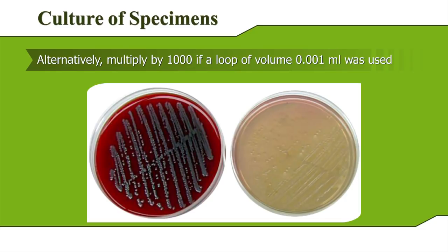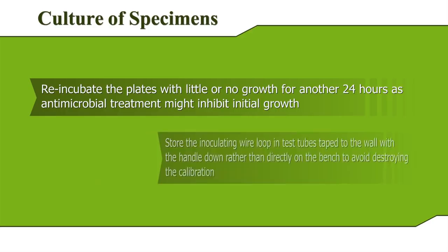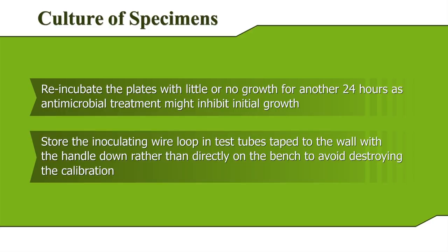Alternatively, multiply by 1000 if a loop of volume 0.001 milliliters was used. Re-incubate plates with little or no growth for another 24 hours as antimicrobial treatment might inhibit initial growth. Store the inoculating wire loop in test tubes taped to the wall with the handle down rather than directly on the bench to avoid destroying the calibration.